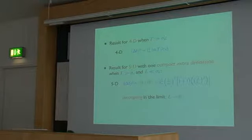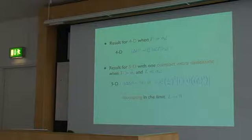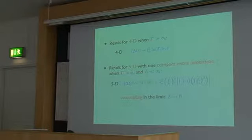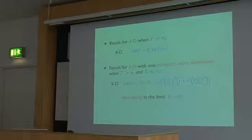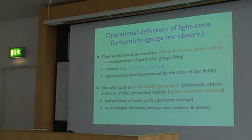Let me now discuss how to properly implement this operational definition of light-cone fluctuations in terms of gauge invariant observables. Defining observables in quantum gravity is a highly non-trivial aspect — even in the infrared sector, defining diffeomorphism invariant observables is a crucial point in quantum gravity, so that your results are gauge-independent. When you try to define this kind of observable, you are generically led to consider non-local observables, and you can try to find ways of getting approximately local observables starting from these non-local ones.